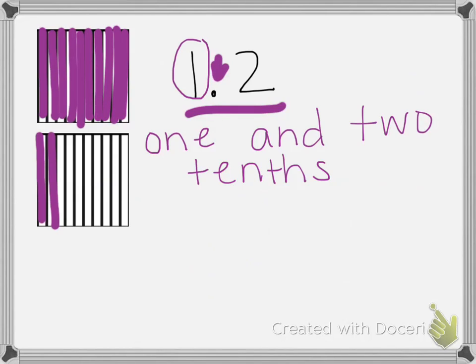So if we want to write this number as a fraction, our whole number goes in front of our fraction. So we have 1 whole, so that comes first. Everything that comes after the decimal point is our fraction. So we have 1 and 2 tenths. So 1 whole and then our fraction is 2 tenths.